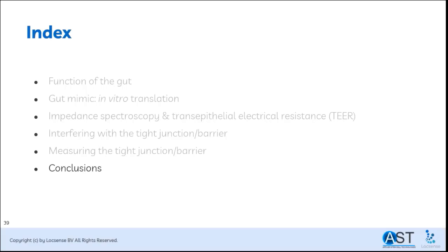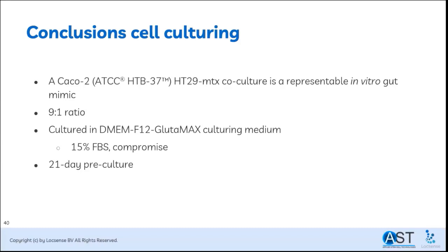This brings us to the conclusions. Regarding cell culture procedure: the Caco-2/HT29-MTX co-culture is a representative in-vitro co-culture able to form a heterogeneous cell layer with a robust barrier function and mucus production. The optimal and in-vivo-like ratio is 9 to 1. The optimal culture medium is DMEM-F12 GlutaMAX with 1% non-essential amino acids and a compromise of 15% FBS. A fully differentiated functional gut barrier is established after three weeks of culture, after which cells can be subjected to compounds that tamper with the barrier function.